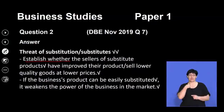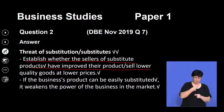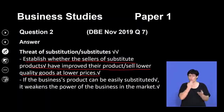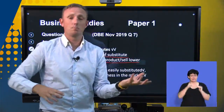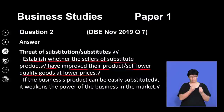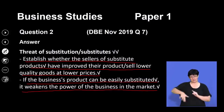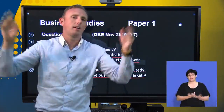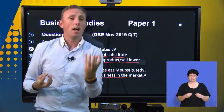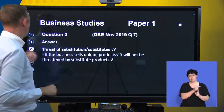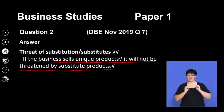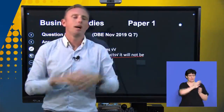Finally, we look at threats of substitutes. We have to establish whether substitute products have improved or sell lower-quality goods at lower prices. If a business's product can easily be substituted, it weakens the power of the business in the market. If the business sells unique products, it will not be threatened by substitute products — the more unique your product, the less likely it will be substituted.